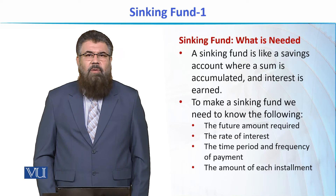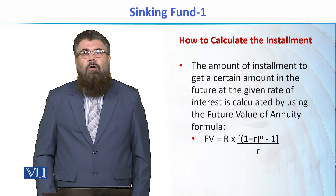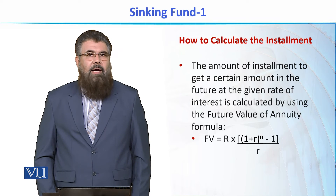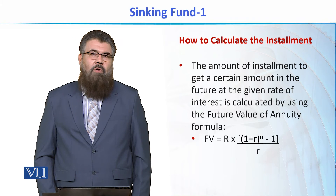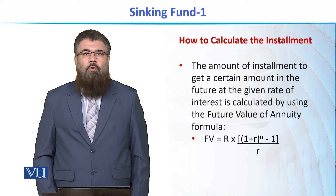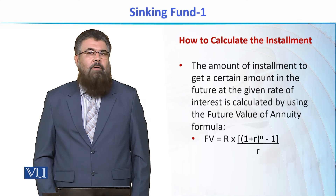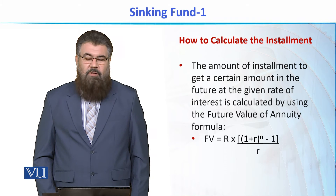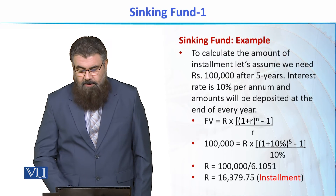Using this information, we calculate the amount of installment. It is important to remember that this installment amount will be the same throughout, because we apply the formula of an annuity. In the formula for the future value of an ordinary annuity: FV is the amount we want to accumulate, capital R is the installment amount, small r is the rate of interest, and N is the number of installments we will deposit.